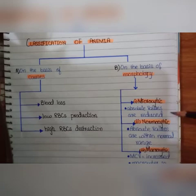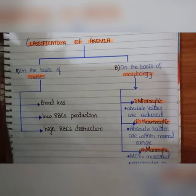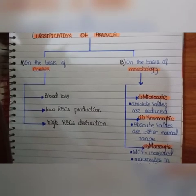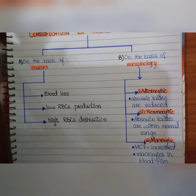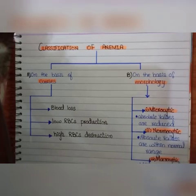Microcytic anemia means all absolute values are reduced — MCV, MCH, and MCHC. Normocytic means all absolute values are within normal range. Macrocytic means MCV (mean corpuscular volume) is increased and macrocytic cells are present on the blood film. This covers the classification of anemia.